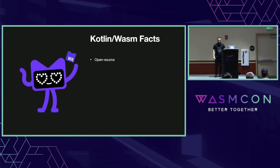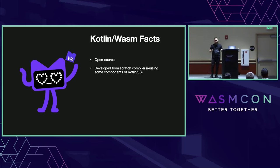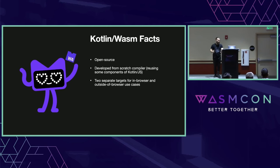Kotlin is open source, so I'll refer to each file and to some implementation details in the GitHub repo. Also it's developed from scratch — we don't use any LLVM or something like that. We just grab IR from the Kotlin frontend and compile it directly to Wasm binary. We're also using some components of Kotlin to JavaScript. We have two sub-targets: one for browser called Wasm.js, and one for outside of browser called Wasm.WASI.